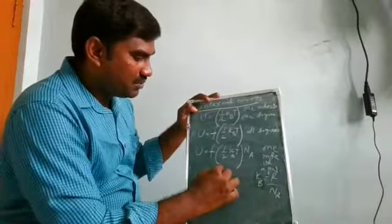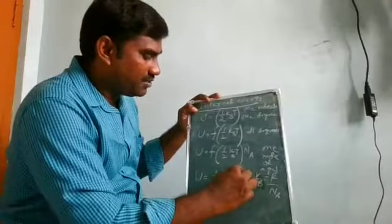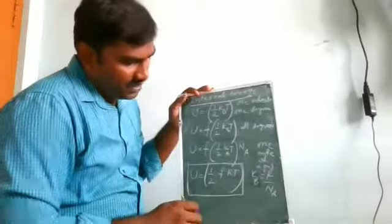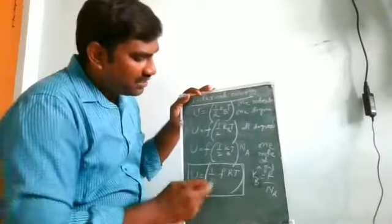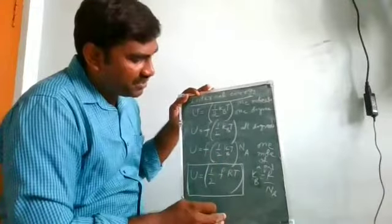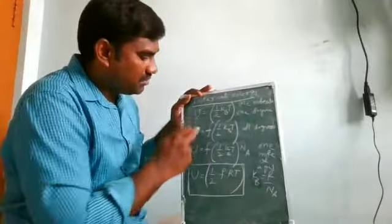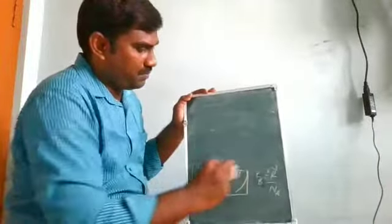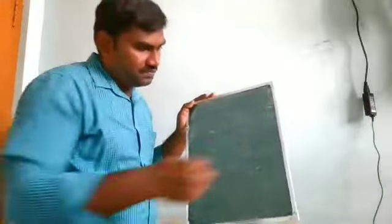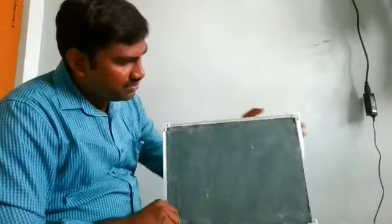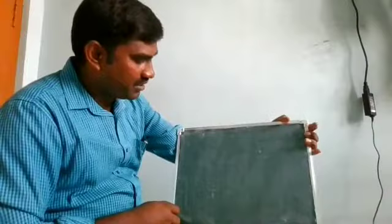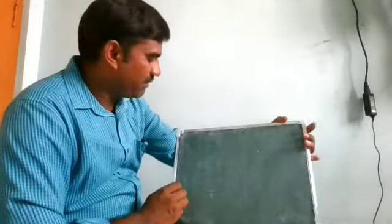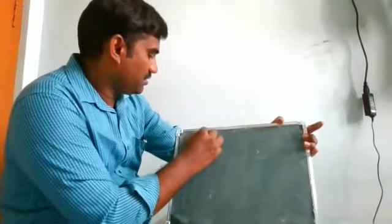So U equals (F/2)RT is the internal energy of one mole of a gas along all degrees of freedom. Based on this expression, we can calculate Cp, Cv, and gamma values for different gases. We will now present a table showing degrees of freedom, internal energy, Cv, Cp, and gamma. The formula for internal energy is F/2·RT; Cv equals dU/dT; Cp equals Cv plus R; and gamma equals Cp/Cv.